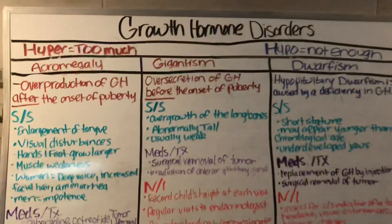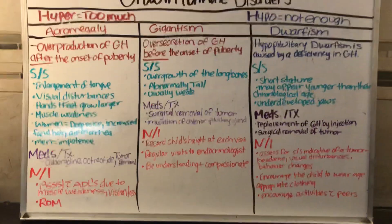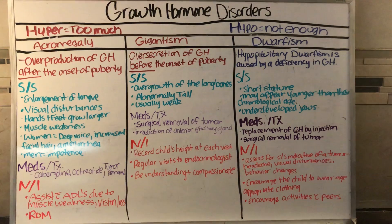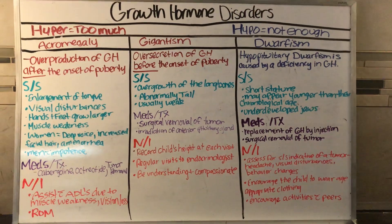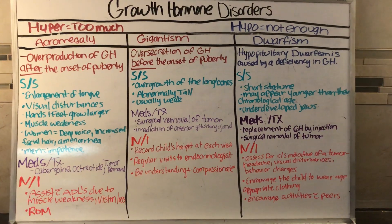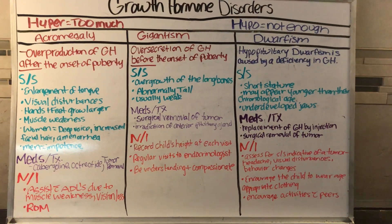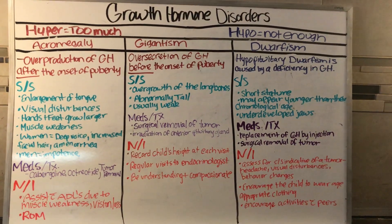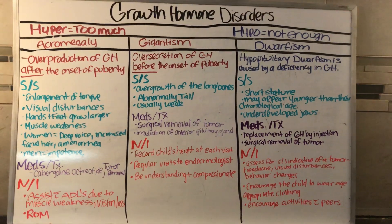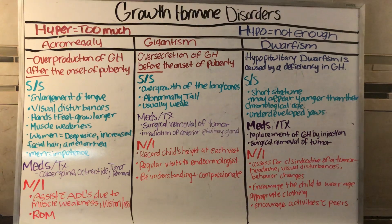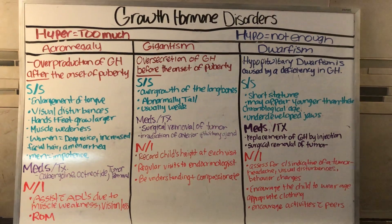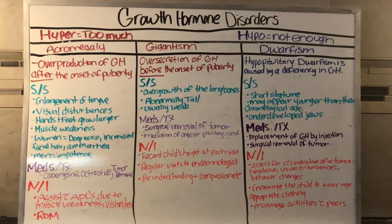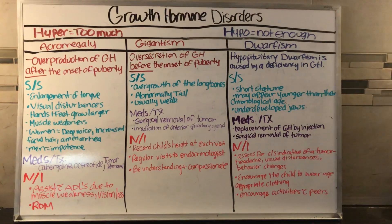To summarize, these are all disorders of the anterior pituitary gland. Too much growth hormone gives you acromegaly and gigantism; not enough gives you dwarfism. Acromegaly occurs after puberty, gigantism occurs before puberty, and dwarfism results from insufficient growth hormone.